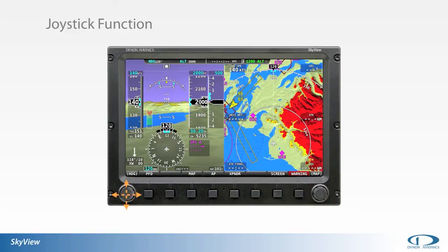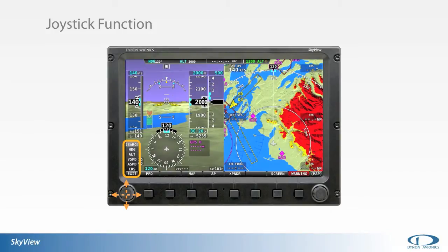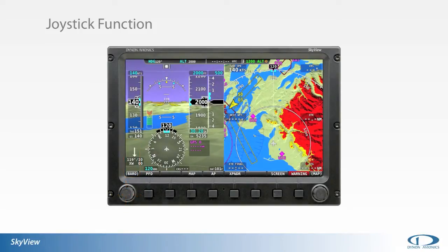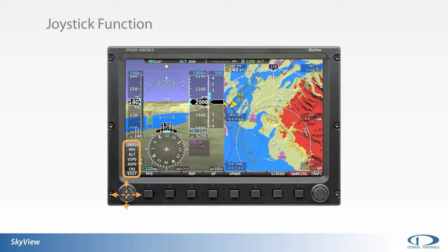From the normal screen display, moving the joystick any direction will open the joystick knob function menu. The pilot can move the function menu by clicking the joystick up or down, moving the cursor over the desired function. Once the desired function is highlighted, moving the joystick left or right closes the menu, selecting the highlighted function. While in the function menu, full operation of the highlighted function is available through rotation of the corresponding joystick knob.